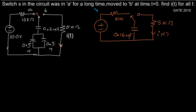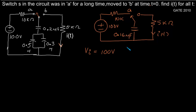The switch S was at position A for a long time, that means it had achieved its steady state. Under steady state, we have a 100V power supply, so the capacitor gets charged to 100V. The initial potential of the capacitor — the initial voltage across the capacitor V initially — will be 100V. When the switch is moved to position B, we have an initial potential of 100V across this capacitor.